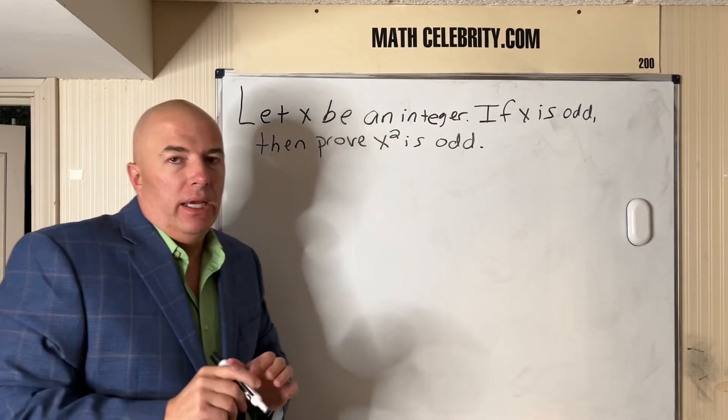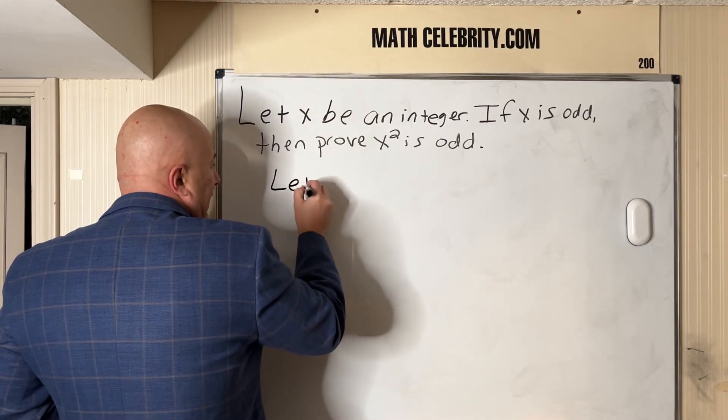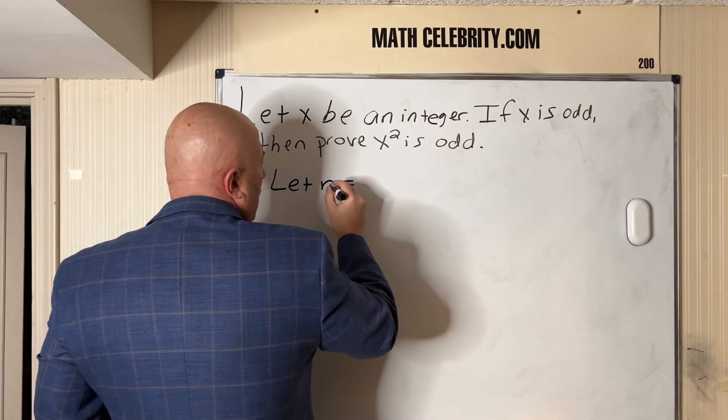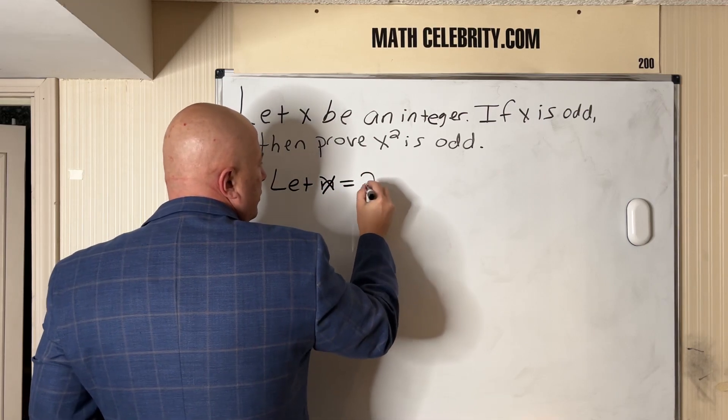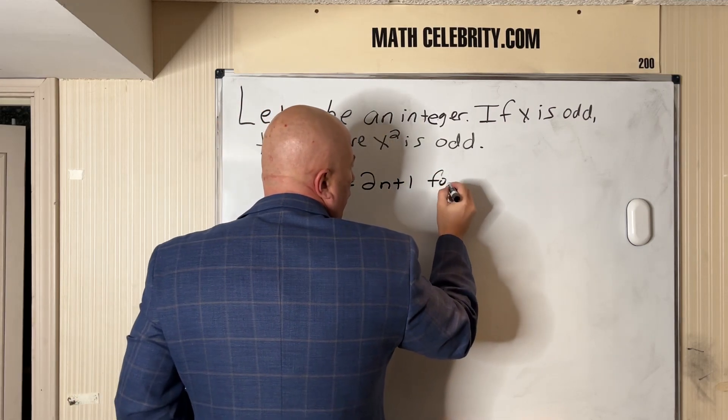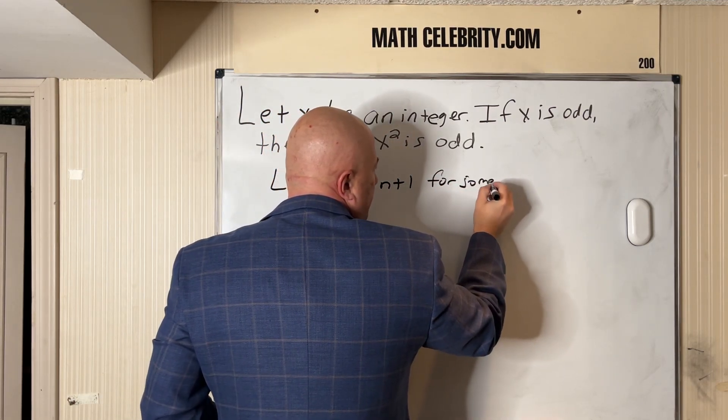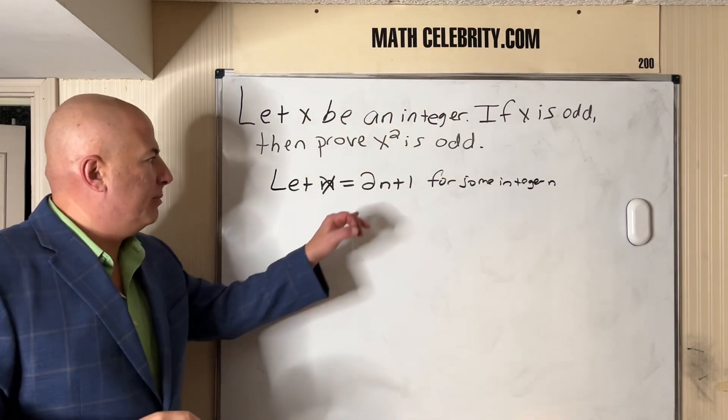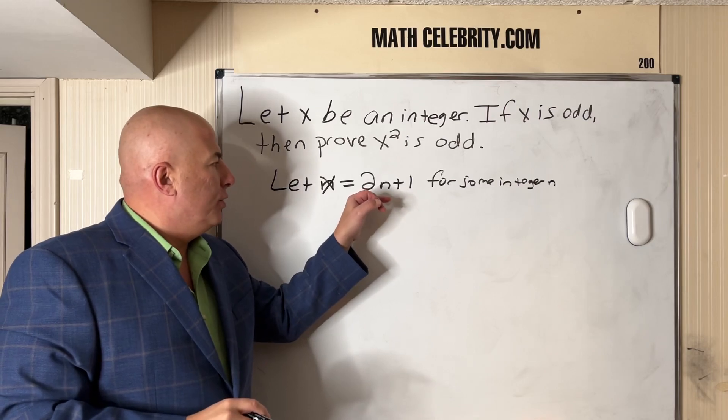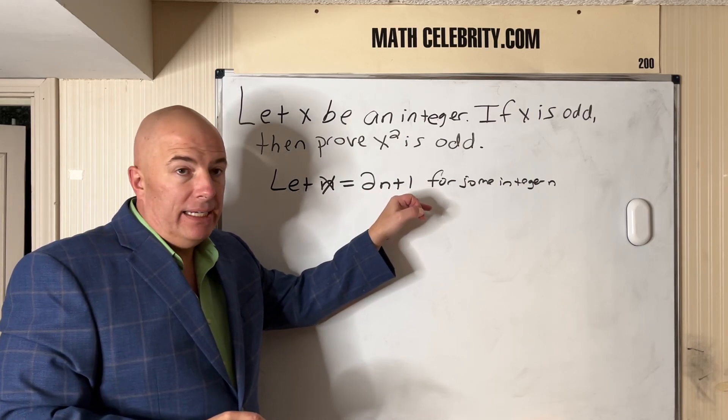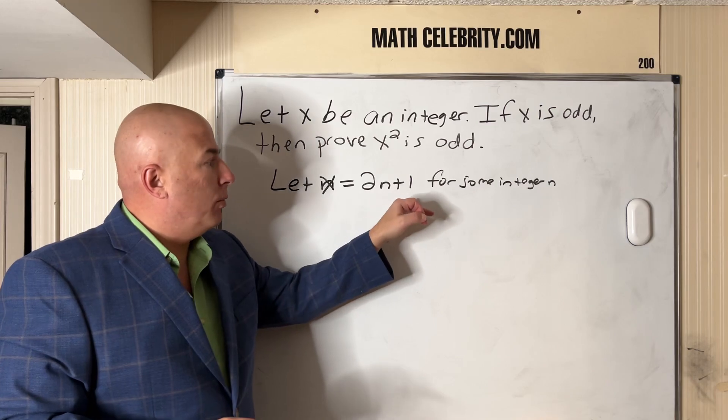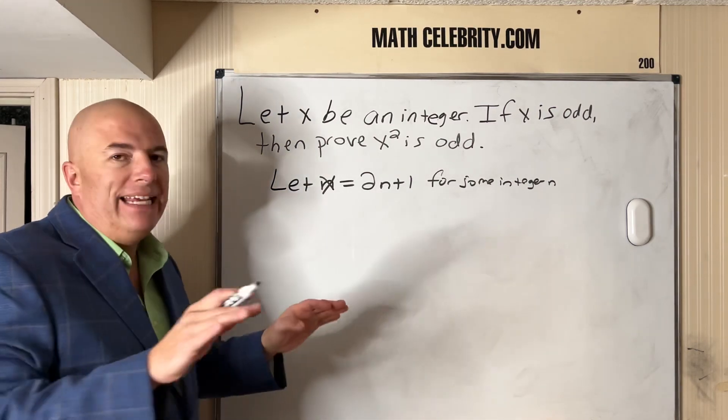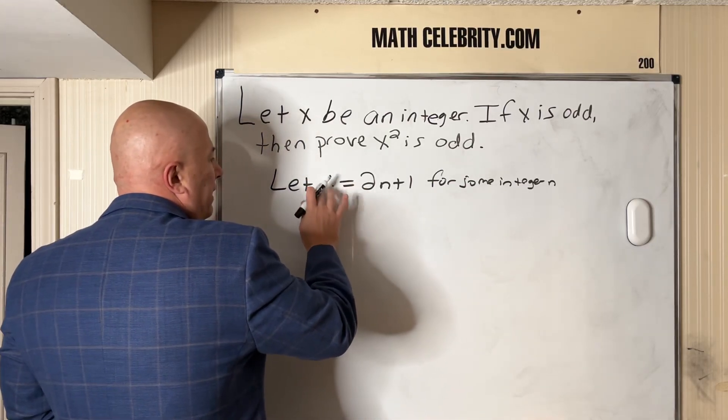The first way to start this is we're going to let x equal 2n+1 for some integer n. The reason why we do 2n+1 is because if n is even, 2 times n is even plus 1 is odd. If n is odd, 2 times n is even plus 1 is odd. So 2n+1 is going to be a representation for any odd number.